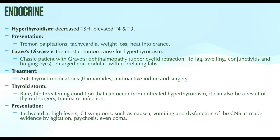The most common cause of hyperthyroidism is Graves disease — up to 80% of patients with hyperthyroidism have Graves disease. A memory trick: think of the phrase 'rushing to the grave.' Graves disease is autoimmune and causes an increase in production and function of both T3 and T4. A classic patient with Graves presents with ophthalmopathy: upper eyelid retraction, lid lag, swelling, conjunctivitis, and bulging eyes. If all these are present, you can confidently diagnose them.